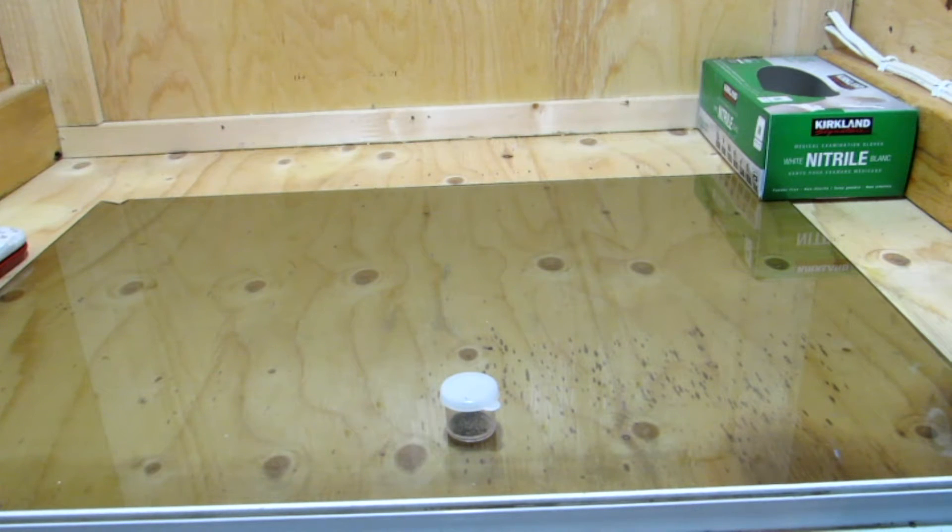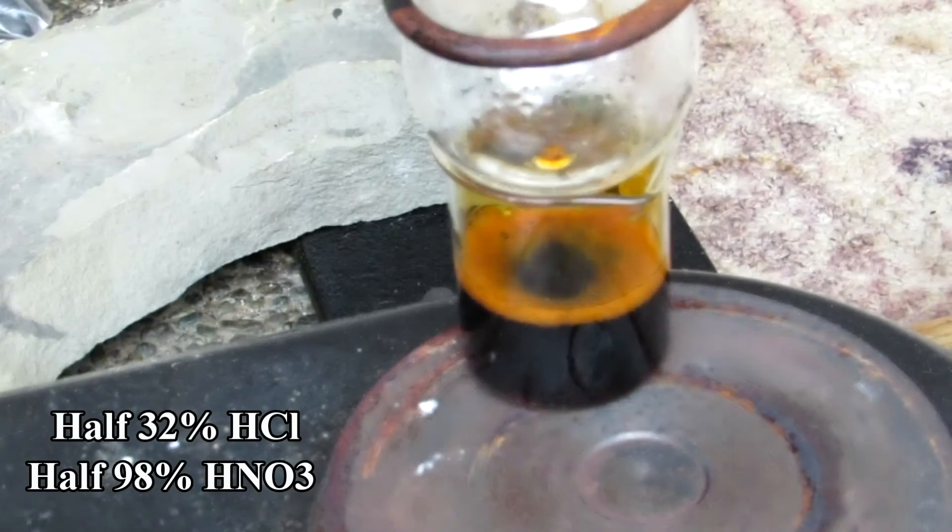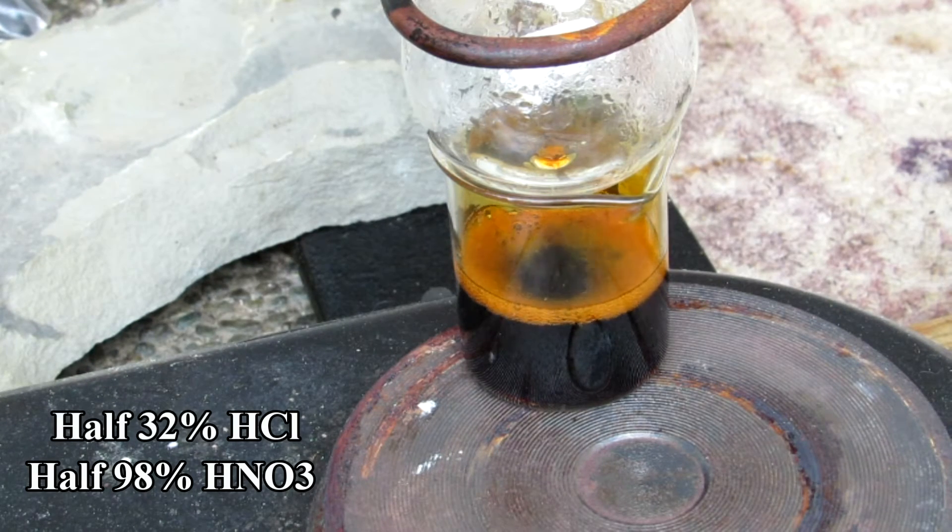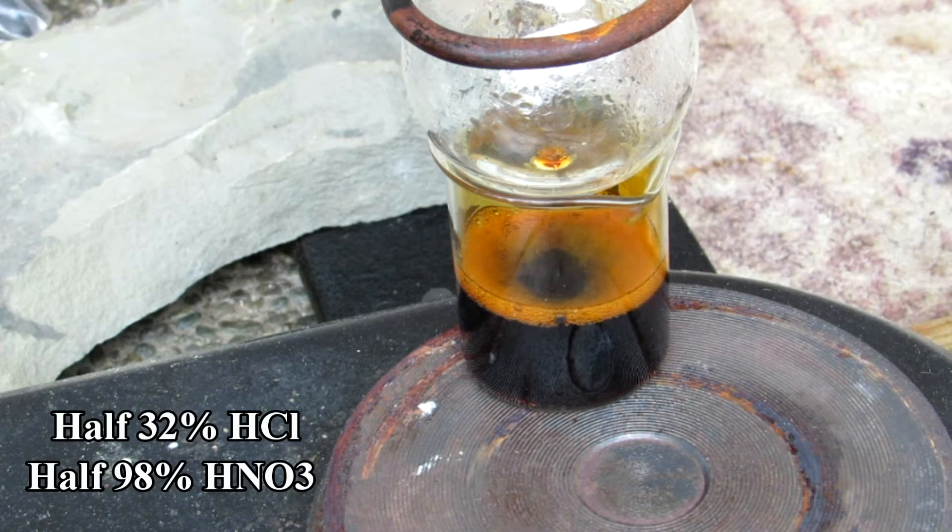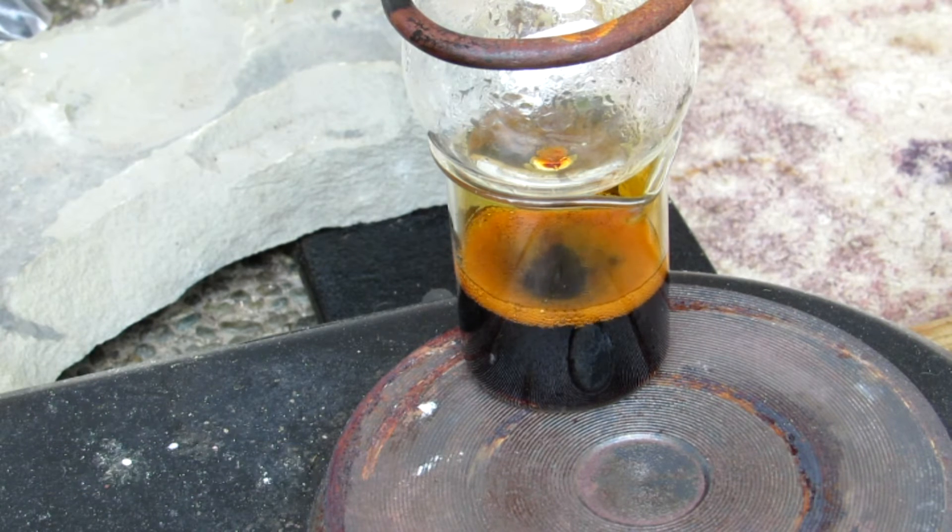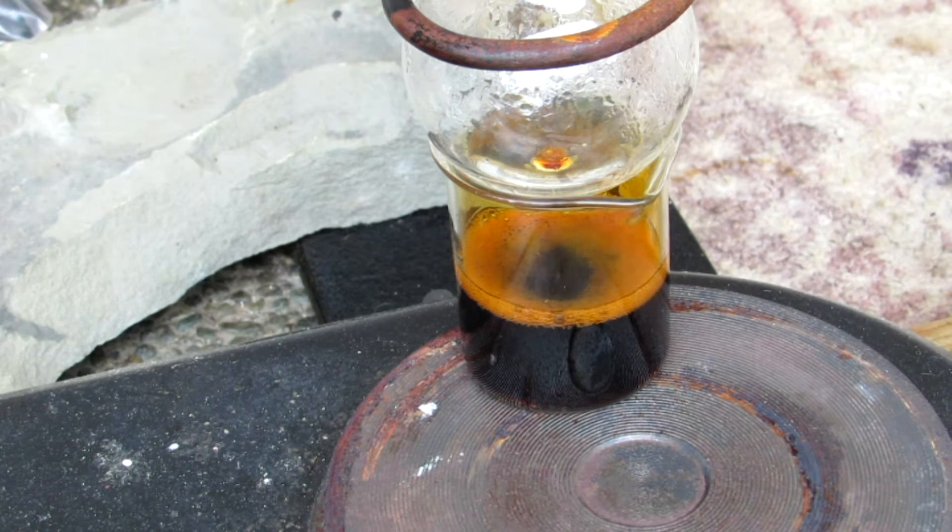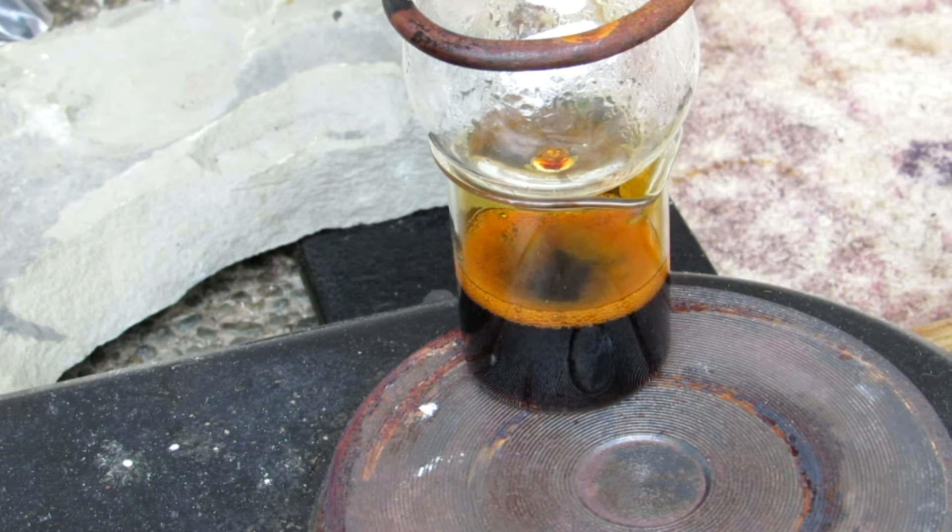In a previous video, I demonstrate how to prepare nitric acid from household materials, and as mentioned above, hydrochloric acid can be purchased as muriatic acid from hardware stores. This aqua regia mixture consists of half 32% hydrochloric acid and half 98% fuming nitric acid. 68% azeotropic nitric acid should work fine as well if you do not have fuming nitric acid.